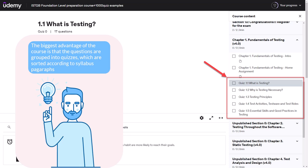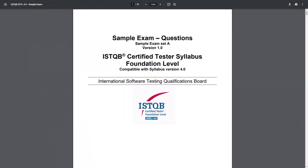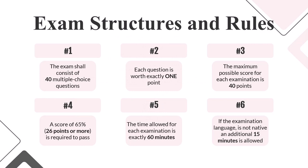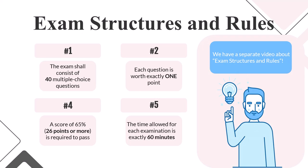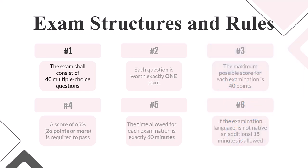The content of the syllabus and the exam is clear — there are six chapters that need to be studied, and at the end an exam awaits us. We have highlighted six important rules that apply to the exam. We have a separate video with many details about the exam, so in this video we will cover the basic rules in a simplified manner. The first exam rule is that the exam shall consist of 40 multiple choice questions. On the ISTQB website we can find exam samples which have the same structure as the real exam, confirming there are exactly 40 questions.